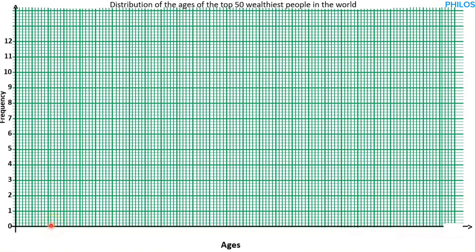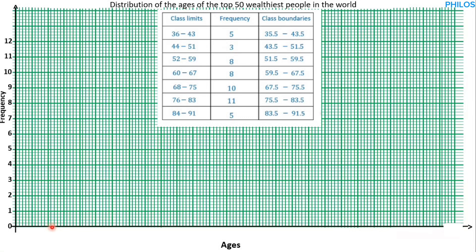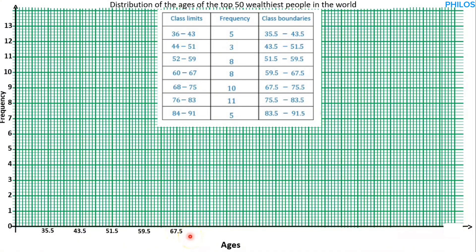When you look at the first class boundary, it's 35.5 to 43.5, so we mark the first as 35.5 and then 43.5. The next class is 43.5 to 51.5, but we have 43.5 already, so we just add the upper of the second class: 51.5. The next class is 51.5 to 59.5 — we have 51.5 already, so just add the upper: 59.5. Then 59.5 to 67.5 — we have 59.5, so we just write the upper: 67.5. Then 67.5 to 75.5 — we have 67.5, so just write 75.5.